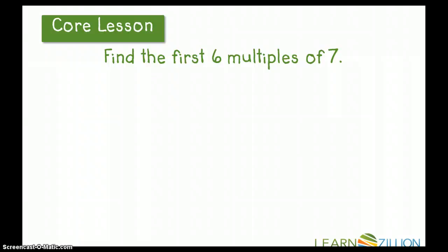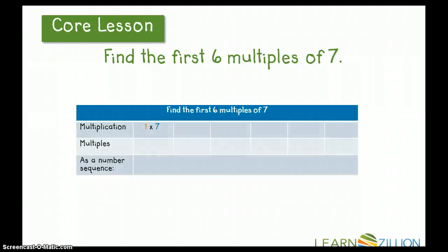So, we're going to find the first six multiples of seven using a table. Here, you can see that in my first row of my table is the multiplication step I'm going to take in order to find my multiples. My multiples are the result of those multiplication problems. And then, I will list the multiples as a number sequence. Let's get started.